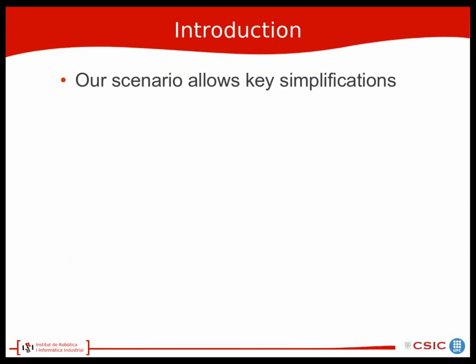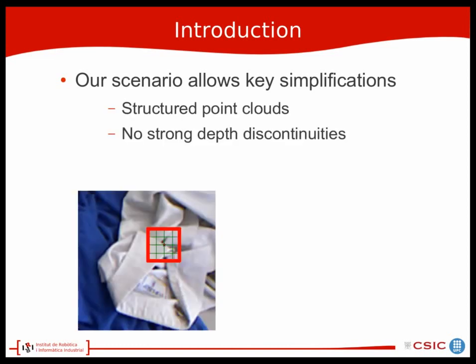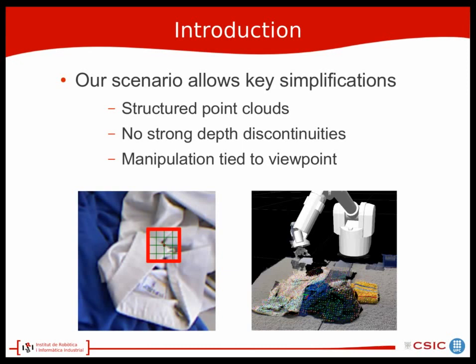We noticed that this experimental scenario allows for some key simplifications. First, we deal with structured point clouds from the Kinect, and since there are no strong depth discontinuities in our scenes, we can assume that neighboring pixels are actually neighboring points in reality. Also, since manipulation is tied to viewpoint, we don't really need full invariance to viewpoint — the small degree of robustness required can be obtained through machine learning on top of the descriptors.